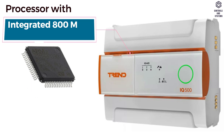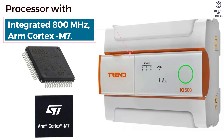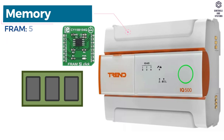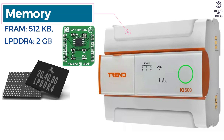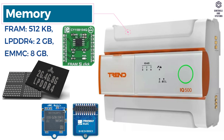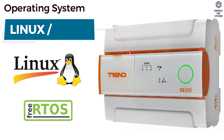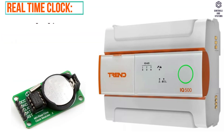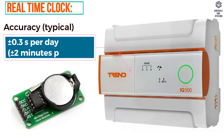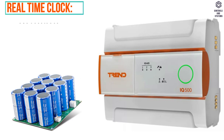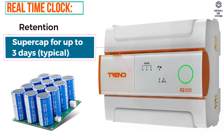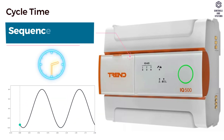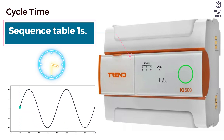Integrated 800 MHz ARM Cortex-M7. Memory: F-RAM is 512 KB, LPDDR4 is 2 GB, EMMC is 8 GB. Operating system is Linux or iOS. Real-time clock accuracy is plus or minus 0.3 seconds per day, retention is super cap for up to 3 days, and cycle time for sequence table is 1 second.